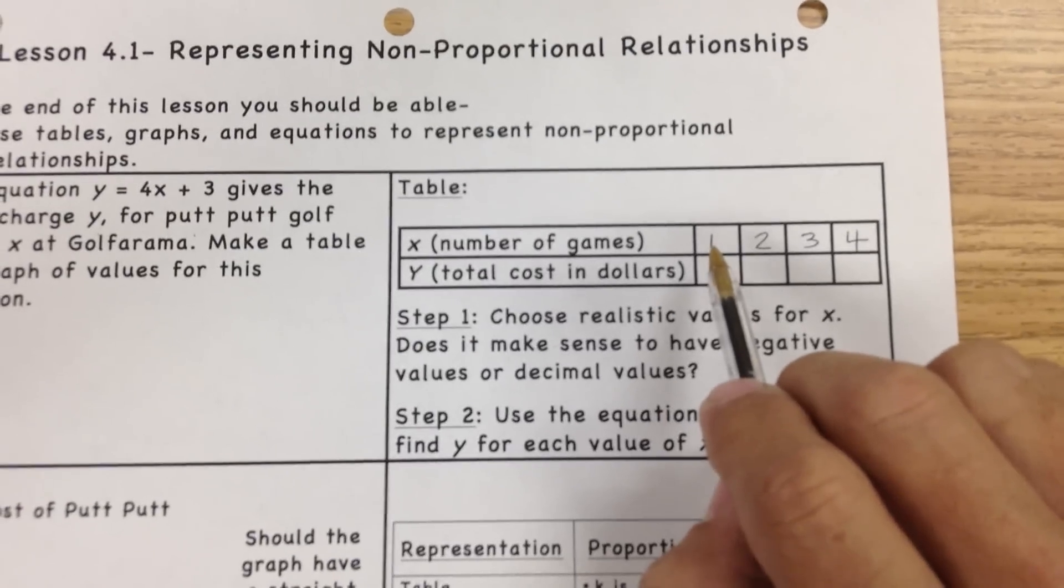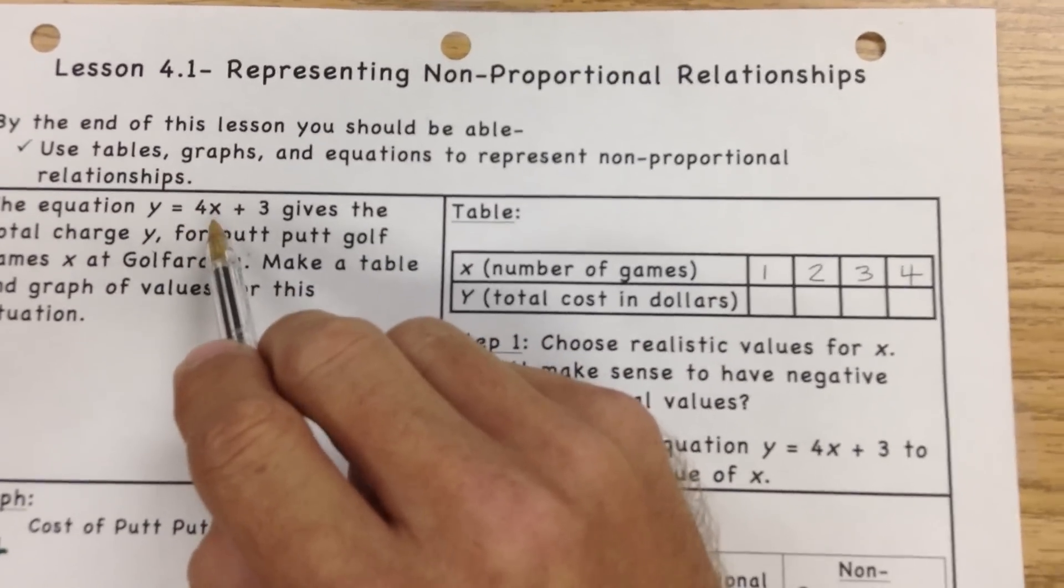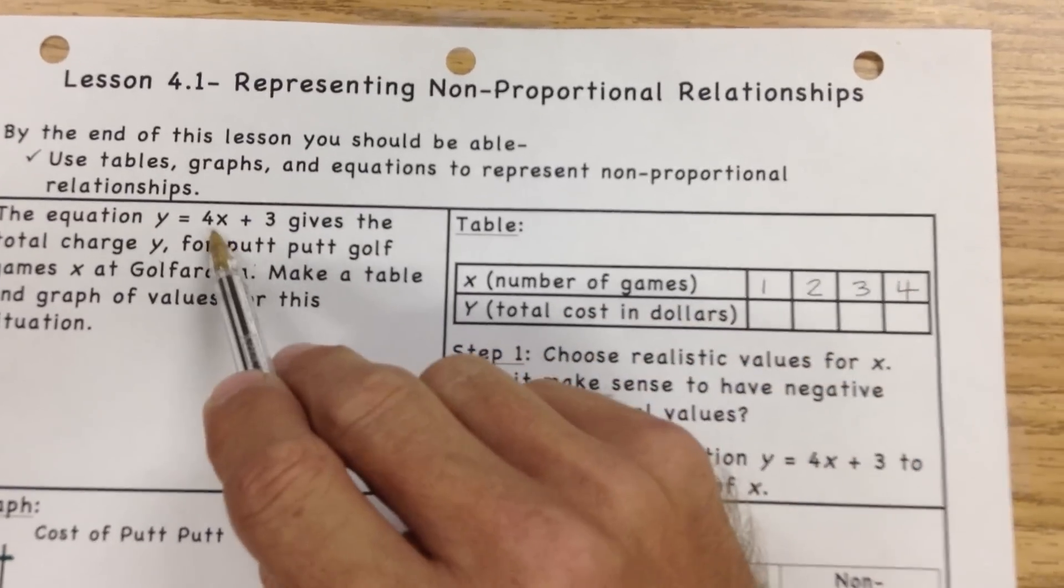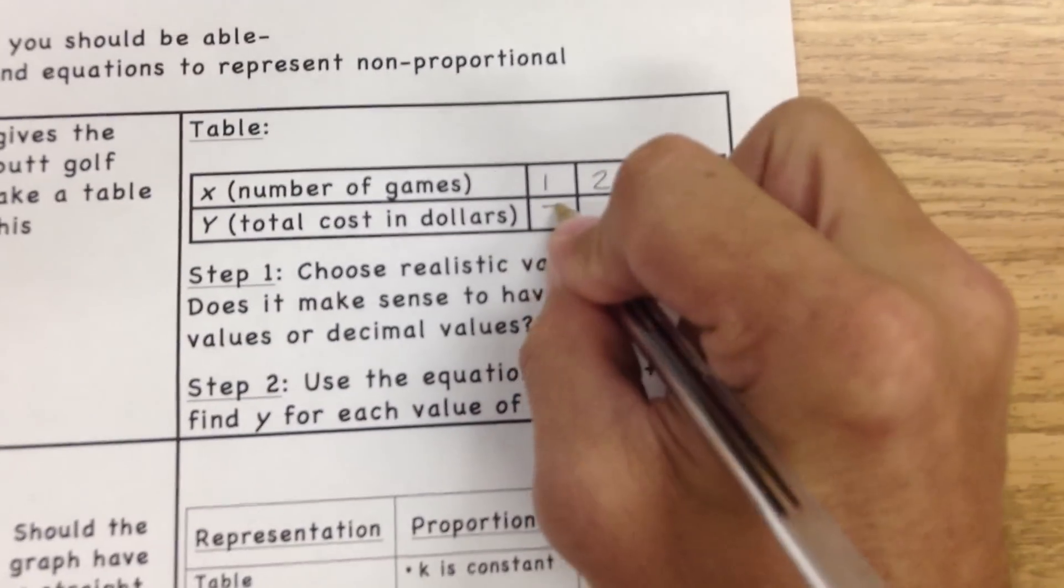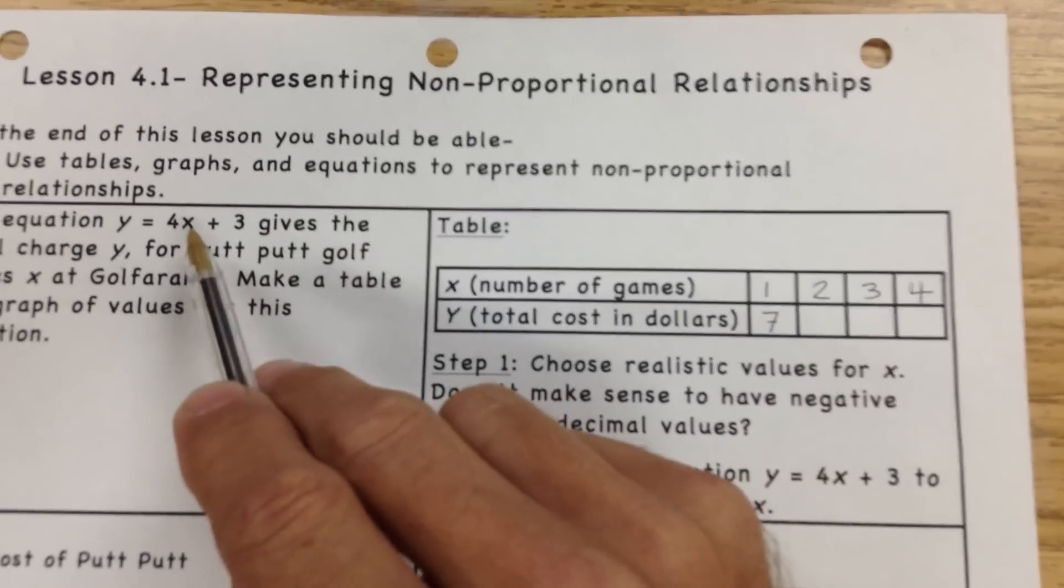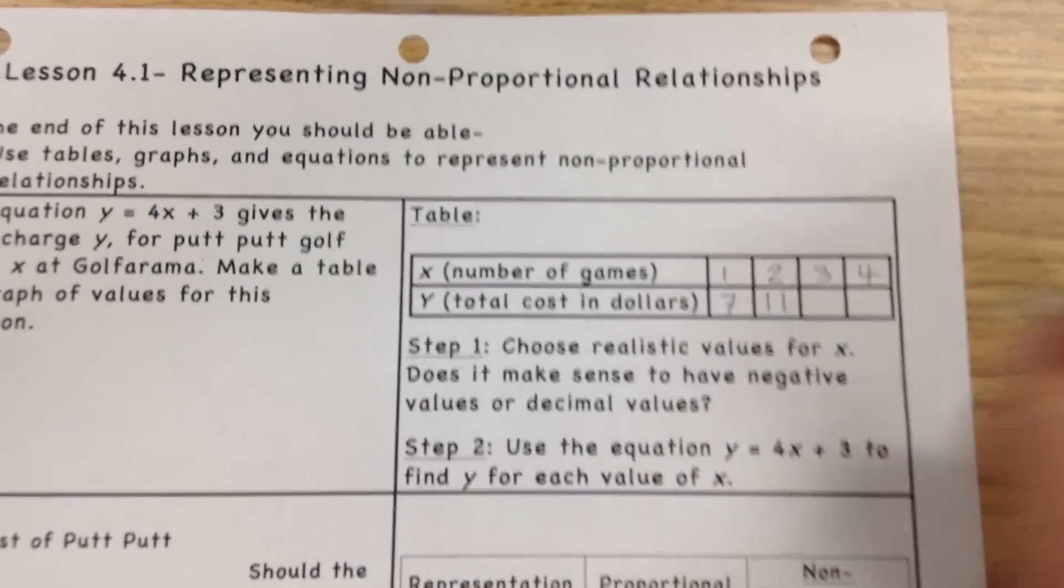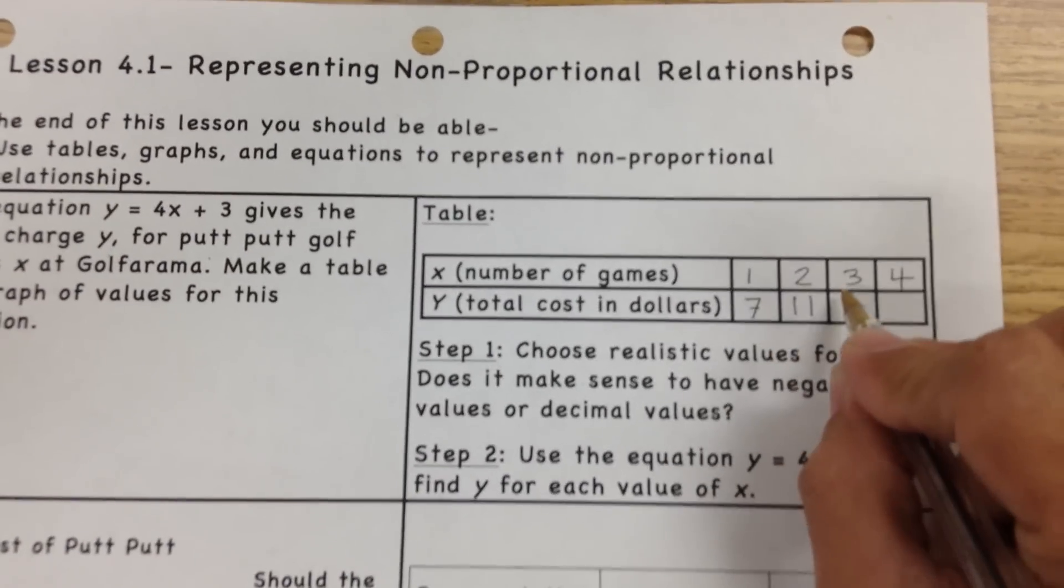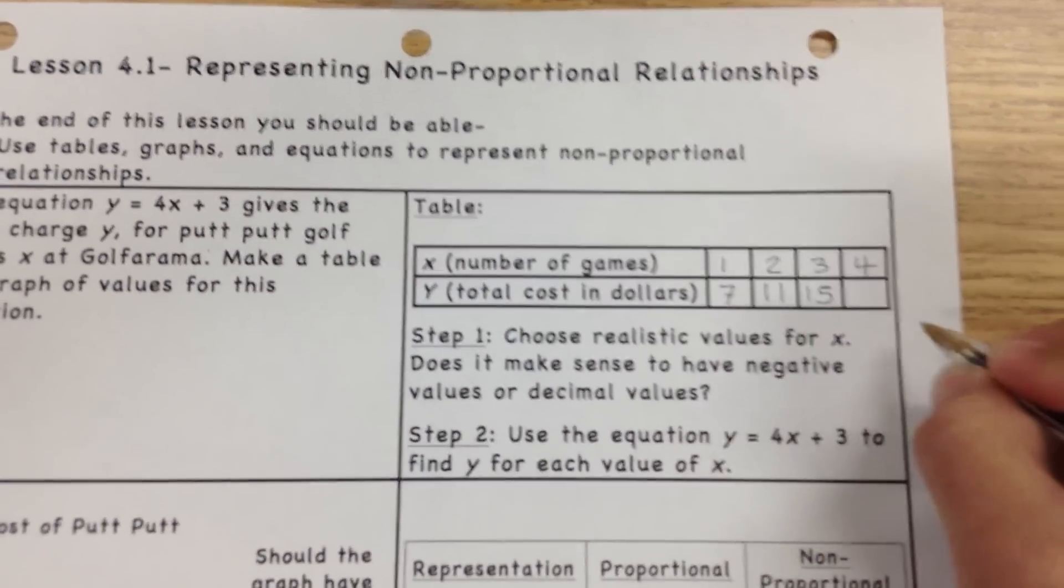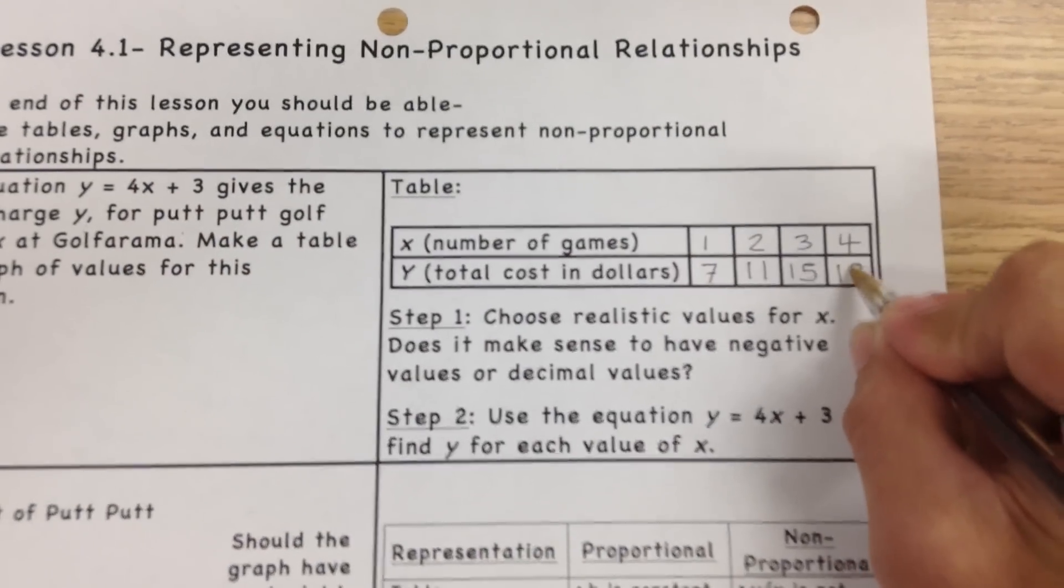So we're going to take this number and put it here for x. Now 4x means 4 times whatever number you put in. So the first one, we're going to do 4 times 1 for one game, which is 4, plus 3 gives us an answer of 7. Now for two games, we're going to put 2 in for x. So 4 times 2, which is 8, plus 3 gives us an answer of 11. The next one, we're going to put a 3 in this equation, so 4 times 3 is 12, plus 3 is 15, and the very last one, 4 times 4, 16, plus 3 is 19.